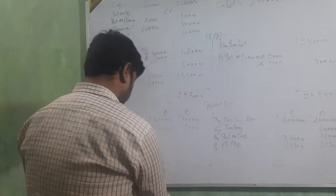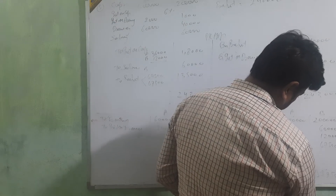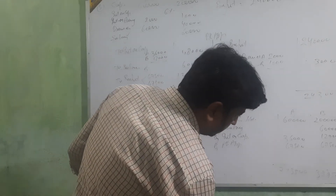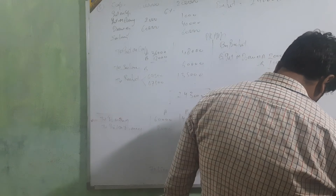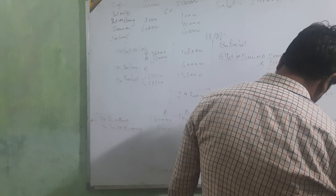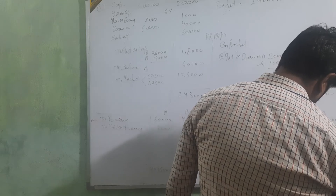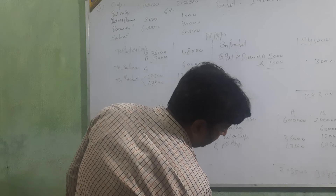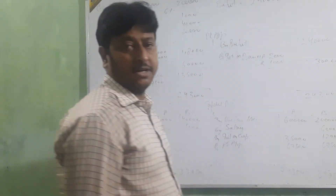The totals work out as follows: A's side totals 2 lakh 60,000 and B's 3 lakh 20,000 on one side, giving totals of 7 lakh 35,000. The closing balances for A and B are 98,500 and 3 lakh 98,500 respectively — wait, let me correct: 98,500 and the other side amounts are verified.